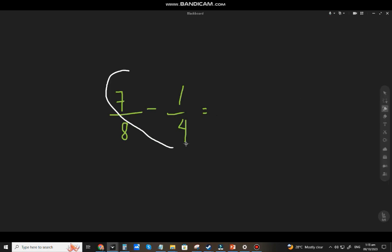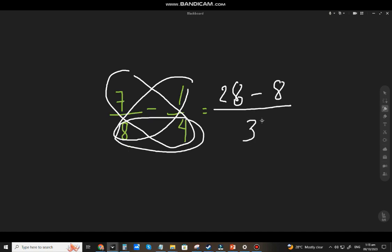So butterfly method. 7 times 4, that will be 28. 1 times 8 - sorry, lagin mo mo ni yung minus. 1 times 8, that will be 8. Over mo lang 8 times 4, that will be 32.